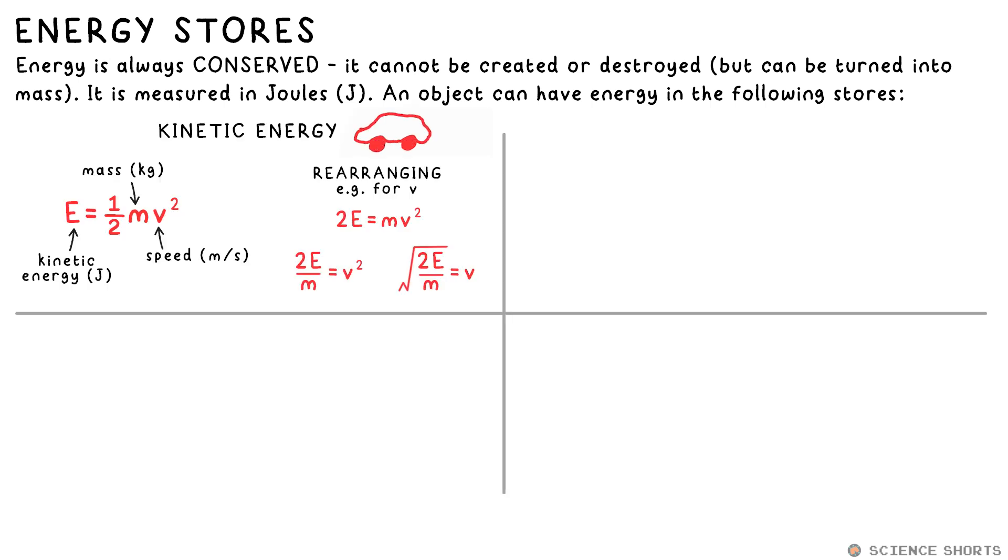Kinetic energy, we calculate that with half mv squared, that's half times mass in kilograms times speed or velocity squared. If an object goes faster, it now has more kinetic energy.